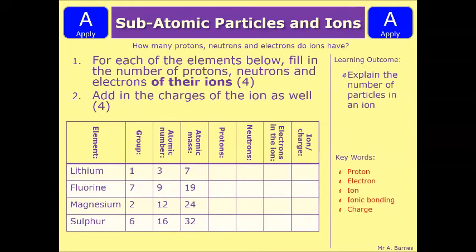Let's have a look at a couple of questions then. This is a bit more tricky now compared to what you've had previously. Let's see how much you've picked up. So it says for each of the elements below, fill in the number of protons, neutrons and electrons of their ions for 4 marks — that is these 3 columns here. And then add in the charge of the ion as well, that's the 4th column. So you get 4 marks for having all this correct, and 4 marks for having all of this column correct. Pause the video, have a go. We'll see how you've done in a minute.